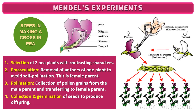The fourth step is collection and germination of seeds to produce offspring. As a result of pollination, a zygote will be formed, seeds are formed, and those seeds are collected and germinated to produce offspring. These offspring would be hybrid plants. These are the four important steps of hybridization techniques.